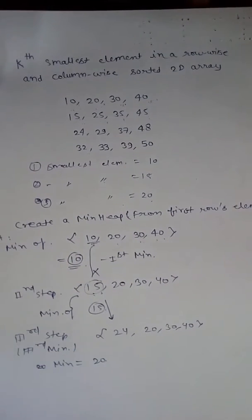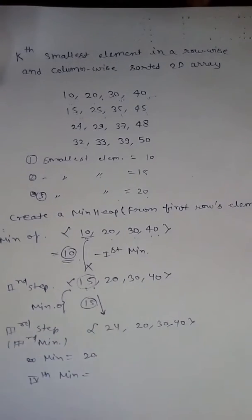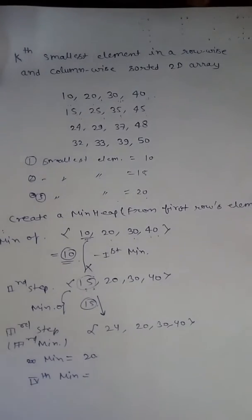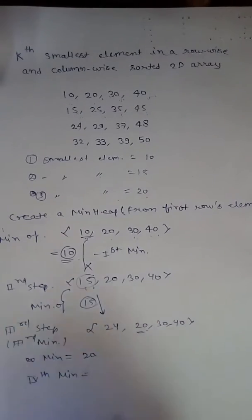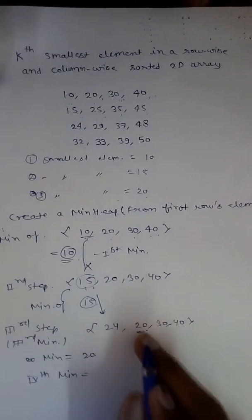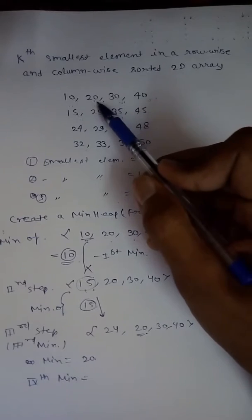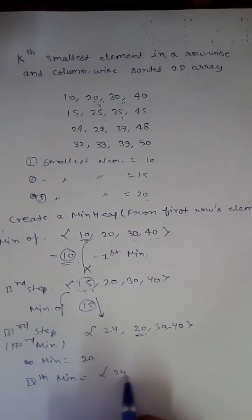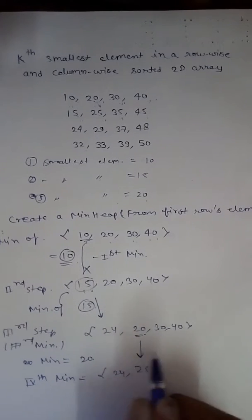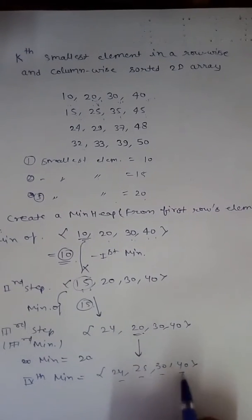For the fourth minimum, we remove the last minimum, which is 20. Since 20 was in the second column, we insert the next minimum possible in that column, which is 25. The heap now becomes {24, 25, 35, 30, 40}, and we can find the next minimum from there.